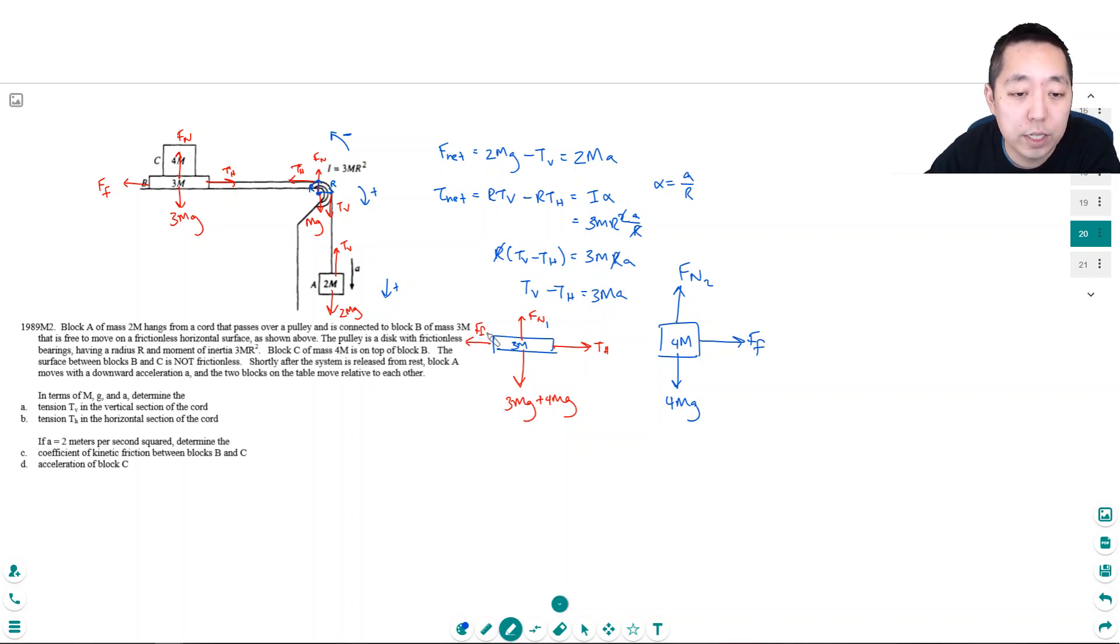So let's do the net force equation. In the x direction, I'm going to have Th, the net force, equals Th minus the force of friction. You have to be a little bit careful. I'm just going to leave it as force of friction.